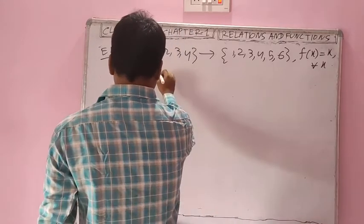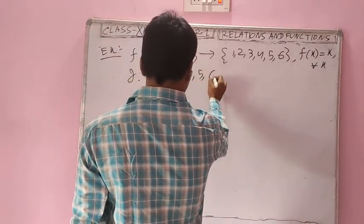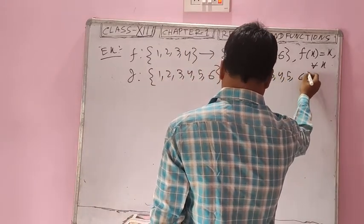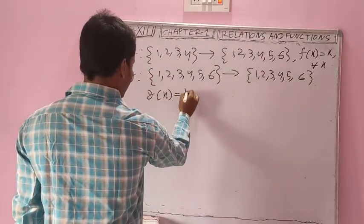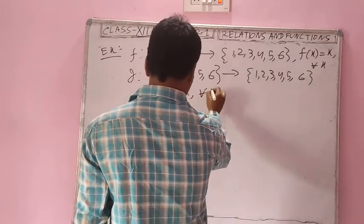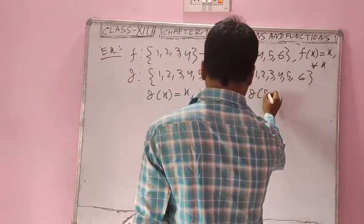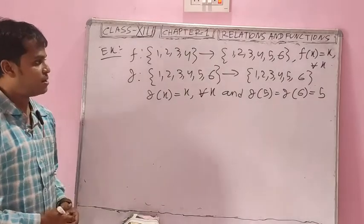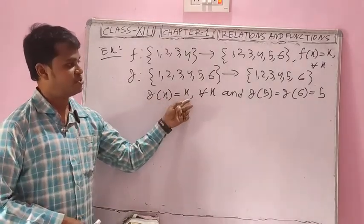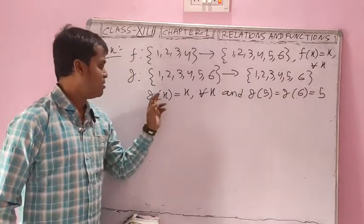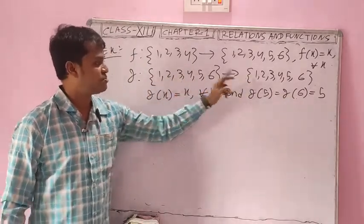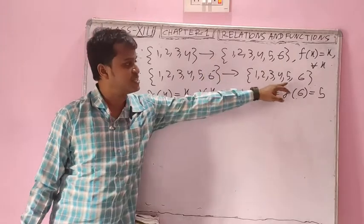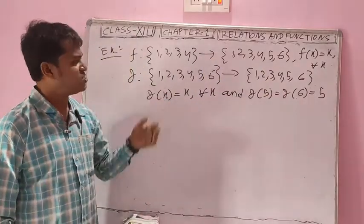So F(1)=1, F(2)=2, F(3)=3, F(4)=4 — this is a one-one function since different elements have different images. Now take another function G from {1, 2, 3, 4, 5, 6} to {1, 2, 3, 4, 5, 6}. Define G(x) = x for all x, except G(5) = 5 and G(6) = 5. So G(1)=1, G(2)=2, G(3)=3, G(4)=4, G(5)=5, G(6)=5.